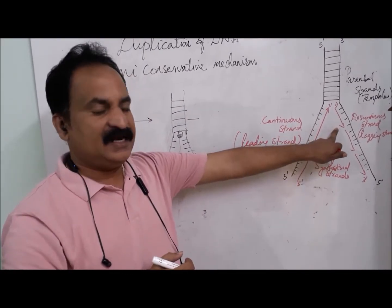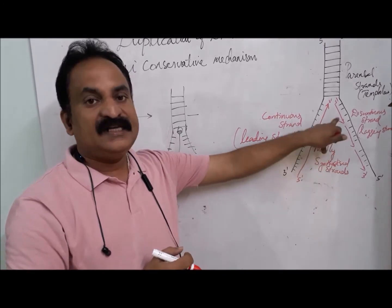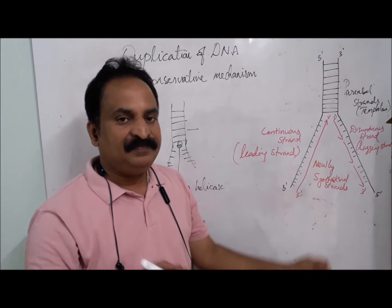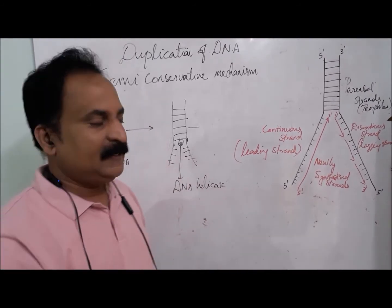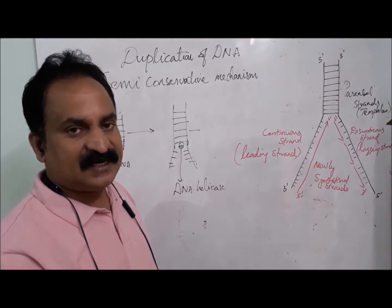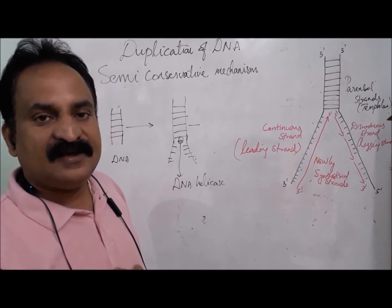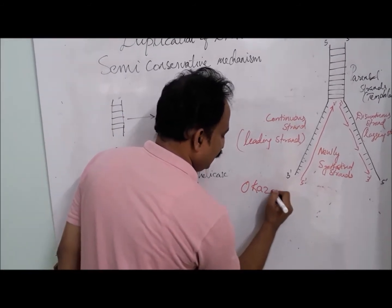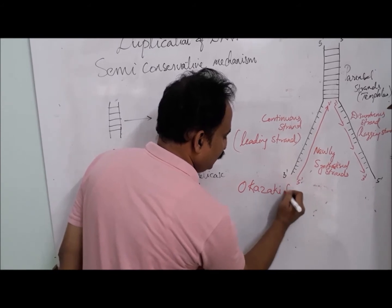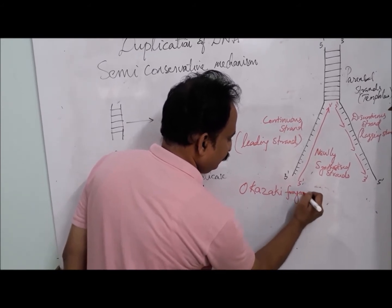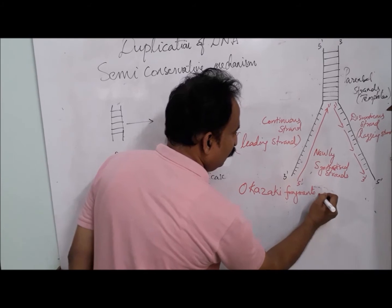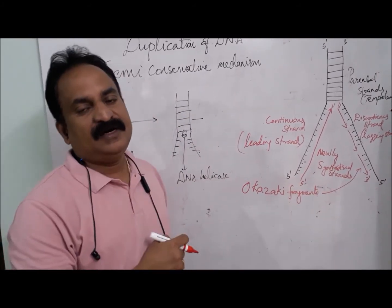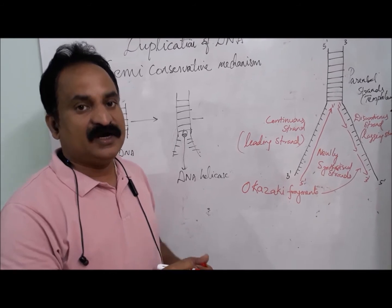In the lagging strand, DNA undergoes replication discontinuously here and there. The fragments of DNA seen in the lagging strand are called Okazaki fragments, a name given to honor the scientist Okazaki.